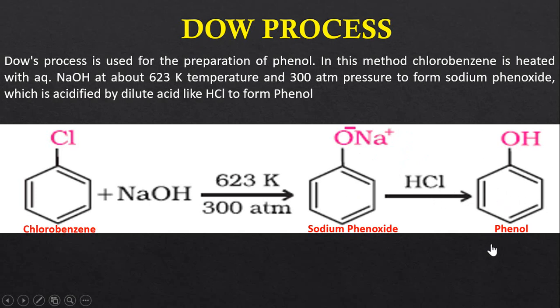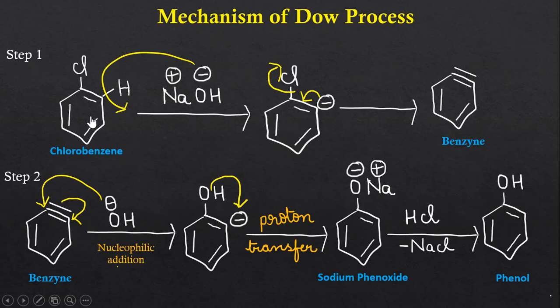Now let us discuss the mechanism of this reaction. This reaction occurs in two steps. First, the base sodium hydroxide removes the alpha hydrogen atom of chlorobenzene. This carbon atom is called the alpha carbon with respect to chlorine, and this hydrogen atom attached to the alpha carbon is called the alpha hydrogen atom.